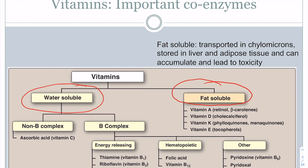Fat-soluble vitamins are taken in the diet and will initially be packaged into lipid particles called chylomicrons. These lipid particles move not only fat-soluble vitamins but also any fats from your diet, bringing them to the liver and sometimes to the adipose tissue. Because fat-soluble vitamins can be stored, they can accumulate and lead to toxicity, so you always want to make sure you don't take these vitamins in excess.